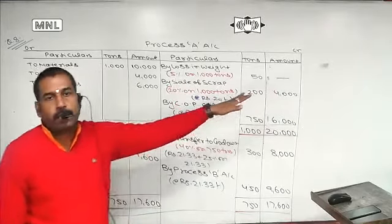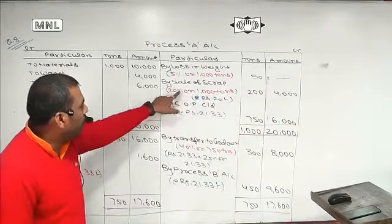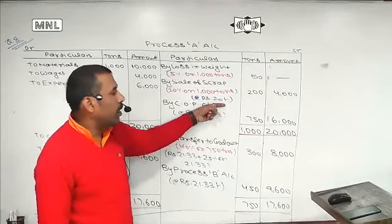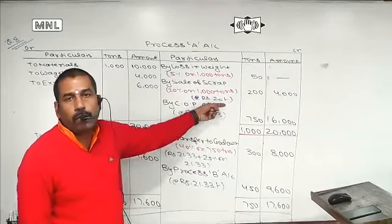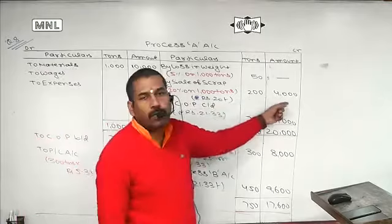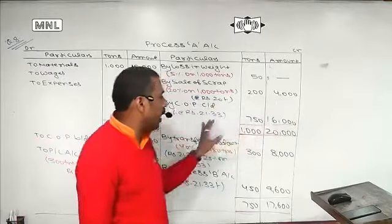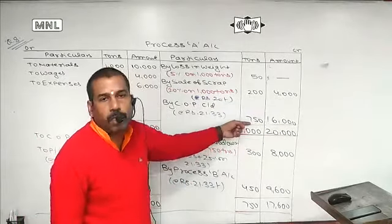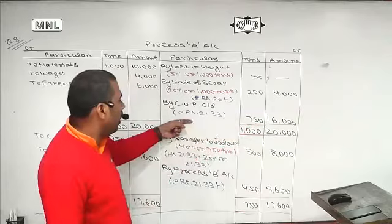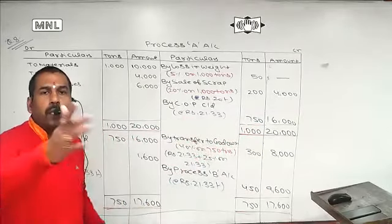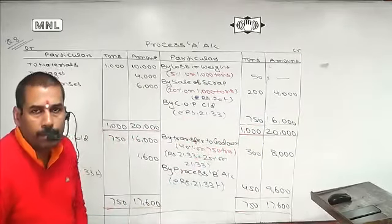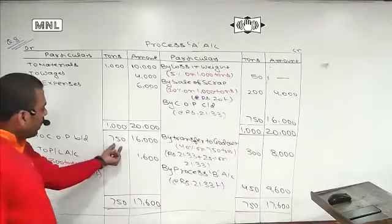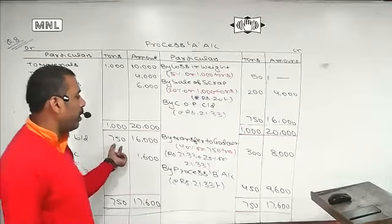The loss in weight is 5%, which is 50 tons — not to be realized. Sale of scrap is 20%, i.e., 200 tons, realized at Rs. 20 per ton, giving Rs. 4,000. The balancing figure is 16,000 for 750 tons at a rate of approximately 21.333. C by D, B by D — now transferred for 750 tons.